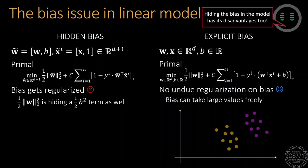There is no such bias regularization if we use an explicit bias term. This can become a big deal if, for example, our data points are far away from the origin and a good separating boundary would need to use a large magnitude bias term.